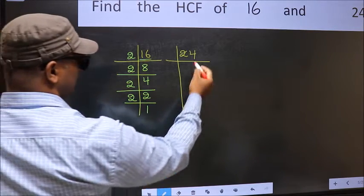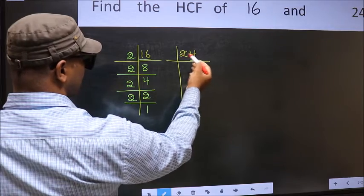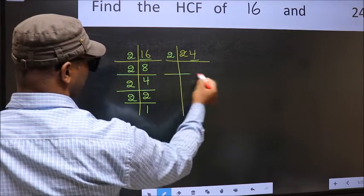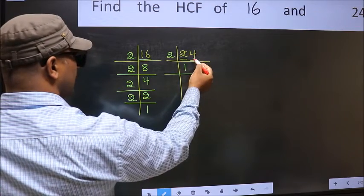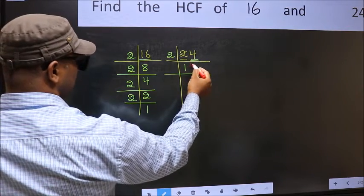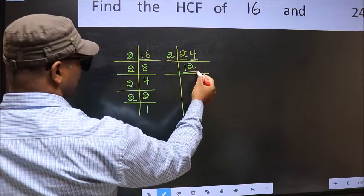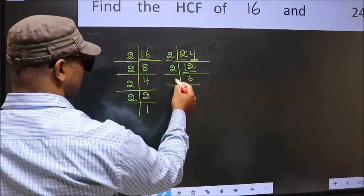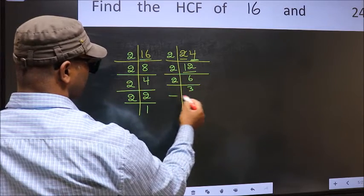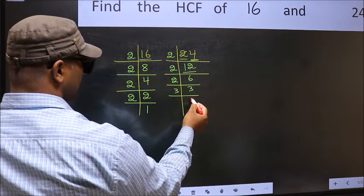Now the other number. Last digit 4 is even, so take 2. First number 2. When do we get 2 in the 2 table? 2 times 1 equals 2. The other number 4. When do we get 4 in the 2 table? 2 times 2 equals 4. Now 12 is 2 times 6 equals 12. 6 is 2 times 3 equals 6. 3 is a prime number, so 3 times 1 equals 3.